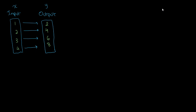Over here we have something called a mapping diagram, and what it does is it takes an input value and maps it onto an output value. As you can see, the output value is two times the input value, so 1 times 2 is 2, 2 times 2 is 4, etc. We can say that in this diagram, x, or the input value, is mapped onto 2x, or two times the input value.